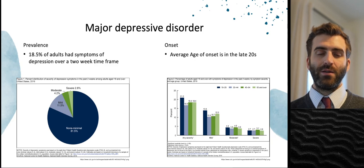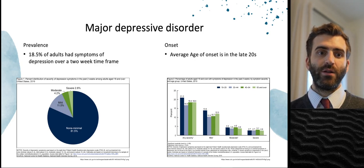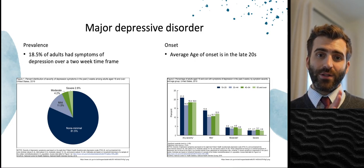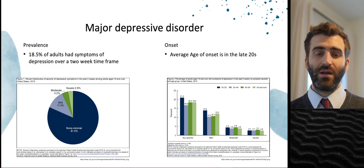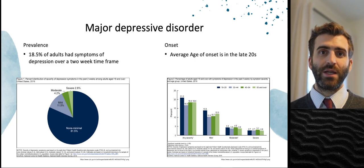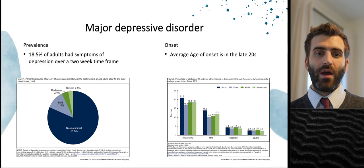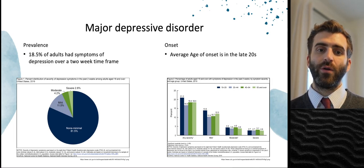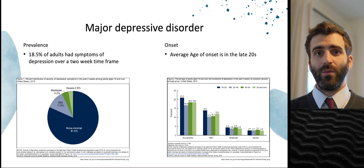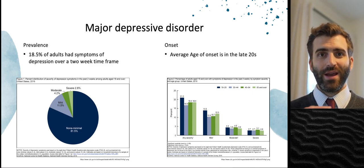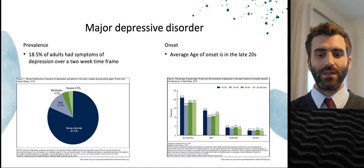The prevalence of depression is quite high. Over a two-week time frame, 18.5% of American adults had symptoms of depression. Luckily the majority had mild symptoms, with fewer having moderate or severe symptoms. Still, 18.5% of adults having some degree of depression at any given time is quite a lot. The average age of onset is important: those aged 18 to 29 have the highest prevalence, which dips in the 30s and 40s, then has another mini peak in the late 40s, 50s, and 60s.